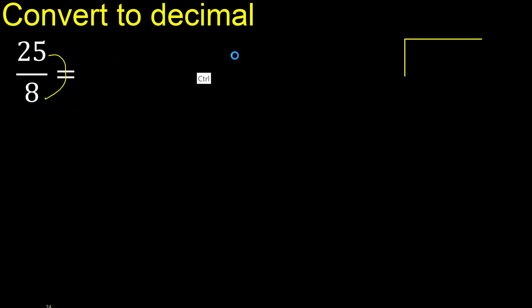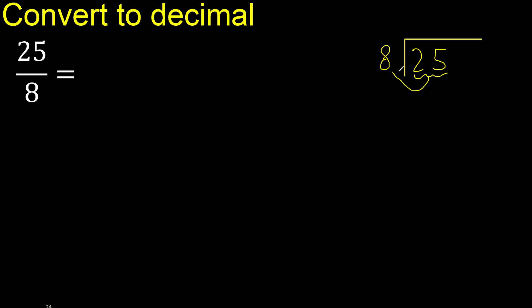25 divided by 8. 2 is less, therefore next. 25 is not less, therefore with 25 and 8 — multiply by which number is nearest to 25 but not greater.